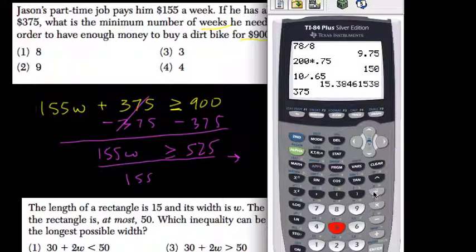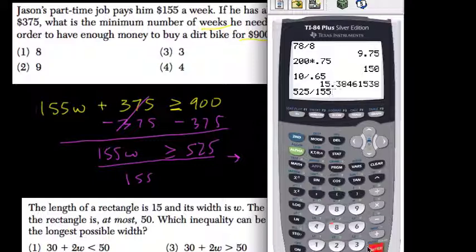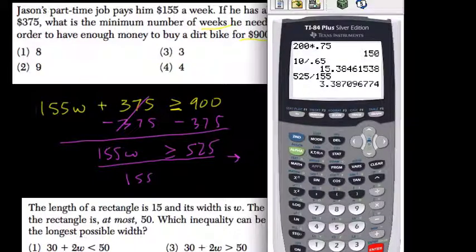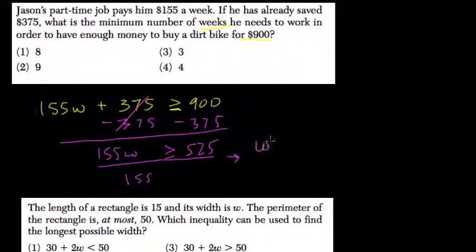$525 divided by $155, that's 3.38. So about 3.38. W has to be greater than about 3.38.